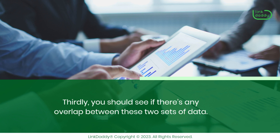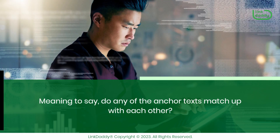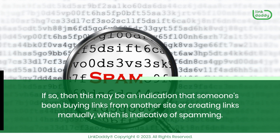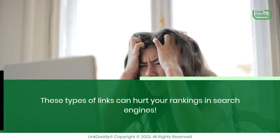Thirdly, you should see if there's any overlap between these two sets of data — meaning, do any of the anchor texts match up with each other? If so, this may be an indication that someone's been buying links from another site or creating links manually, which is indicative of spamming. These types of links can hurt your rankings in search engines.